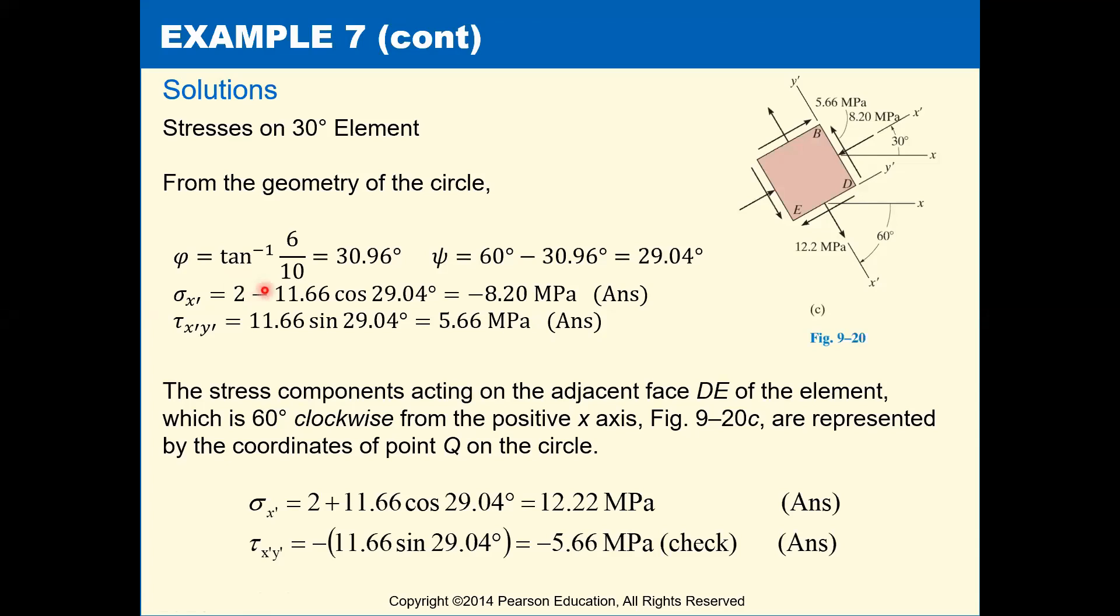So you can do that here. Our x' again is that 2, our initial starting point, and then it's going to be minus our radius times cosine of that 29.04, and that'll give us our x coordinate of negative 8.2. And then tau x' y' at that point is just going to be the radius times sine of 29.04 degrees. That'll give you a positive 5.66 megapascals.